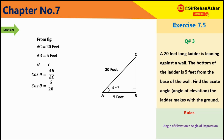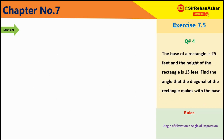Theta = cos inverse (5/20) = cos inverse (0.25)। Cos inverse की value find करते हैं 0.25 पर तो theta = 75.5 degree। Ladder ground के साथ 75.5 degree का angle बना रही है।